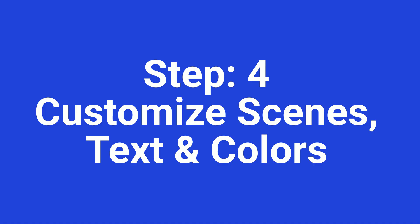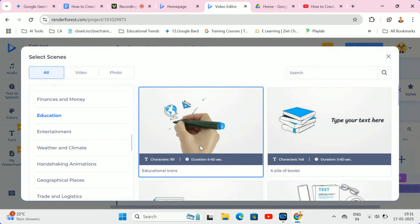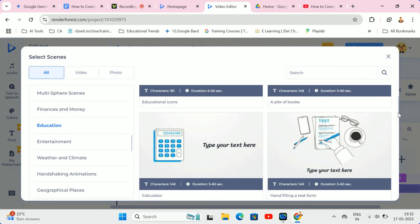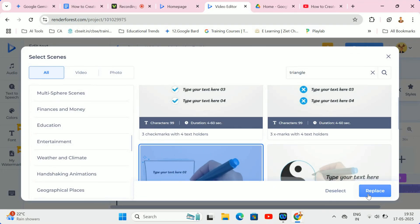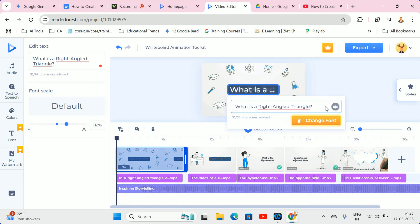Next step 4. Customize Scenes, Text and Colors. Ready to customize this whiteboard animation, here's how you can make it your own. First, change the scene visuals by clicking on a scene, and then selecting either a similar alternative or a completely new visual from the library. Next, to edit the text, simply click on any text element directly on the screen to rewrite it or apply different formatting options.